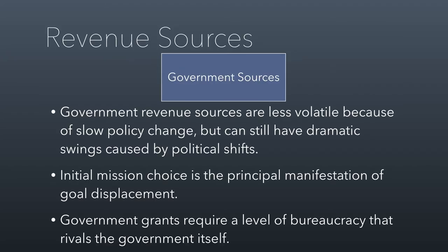Let's talk about government sources. Government revenue sources are a little less volatile because of slow policy change, but there can be punctuated moments or swings caused by political shifts, both creating excess funding or drying up funding. For example, nonprofits in Utah relying heavily on Vista and AmeriCorps grants saw that dry up quite a bit when the Tea Party took over Congress. It's a weird kind of volatility — it's not swinging all the time, but there can be punctuated moments where it swings pretty heavily.